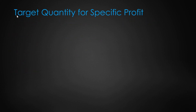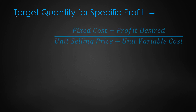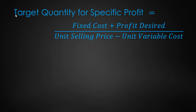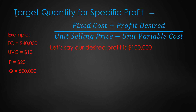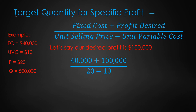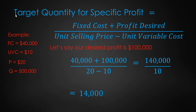You might also want to calculate a target quantity for a specified profit. The formula is: fixed cost plus desired profit in the numerator, divided by the contribution margin (unit selling price minus unit variable cost). For our example with a desired profit of $100,000, that's ($40,000 plus $100,000) divided by ($20 minus $10), which equals $140,000 divided by 10 — so we need to sell 14,000 units to achieve a profit of $100,000.